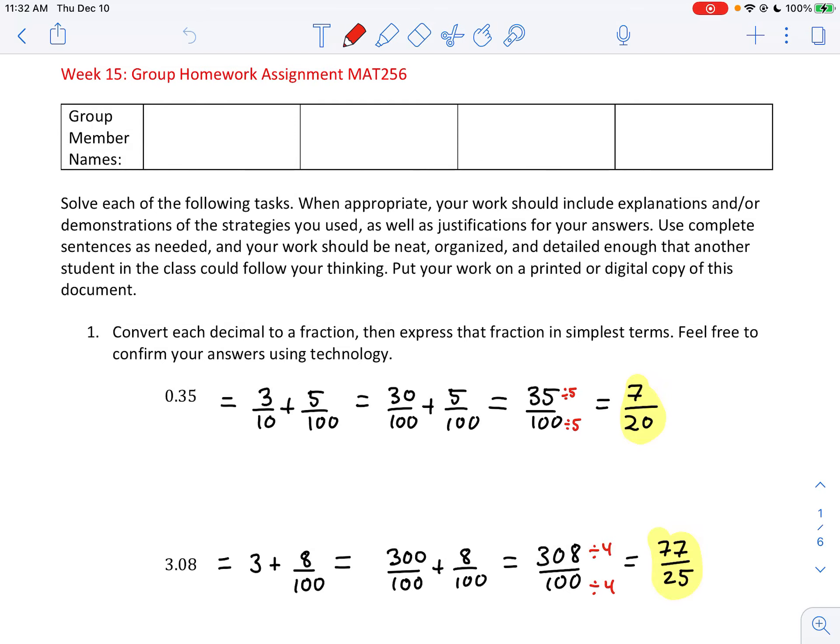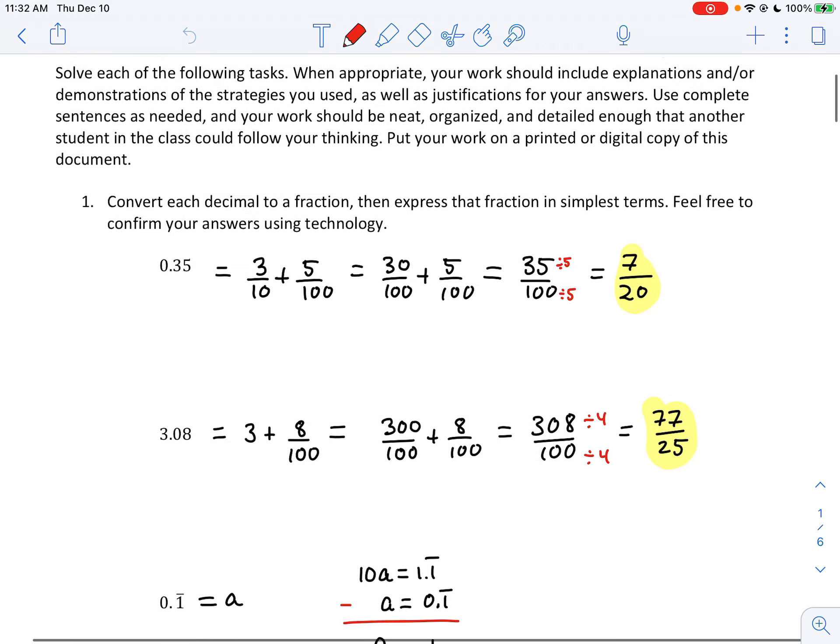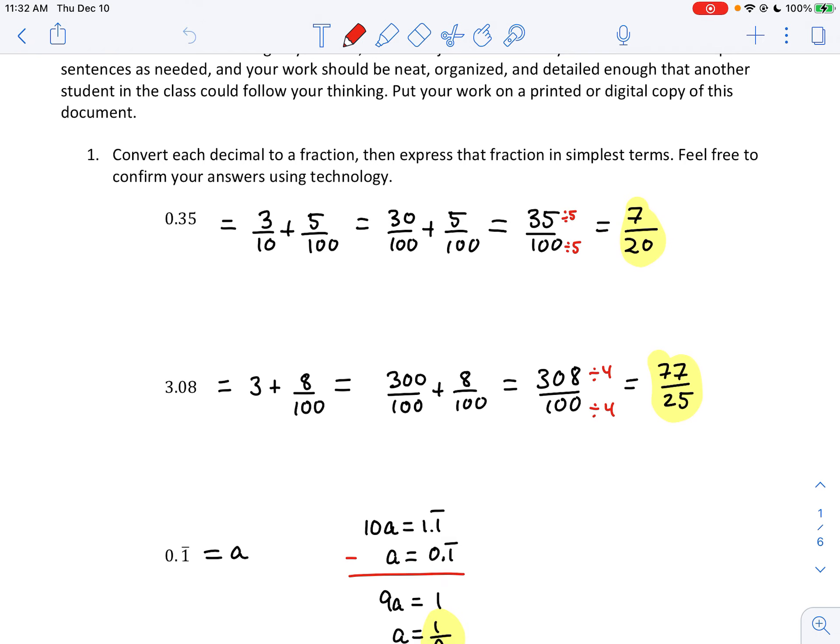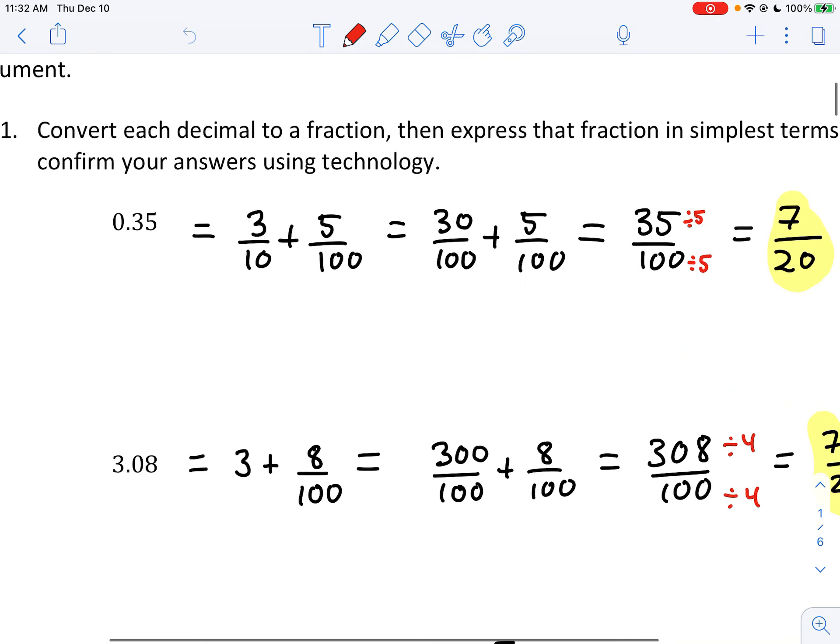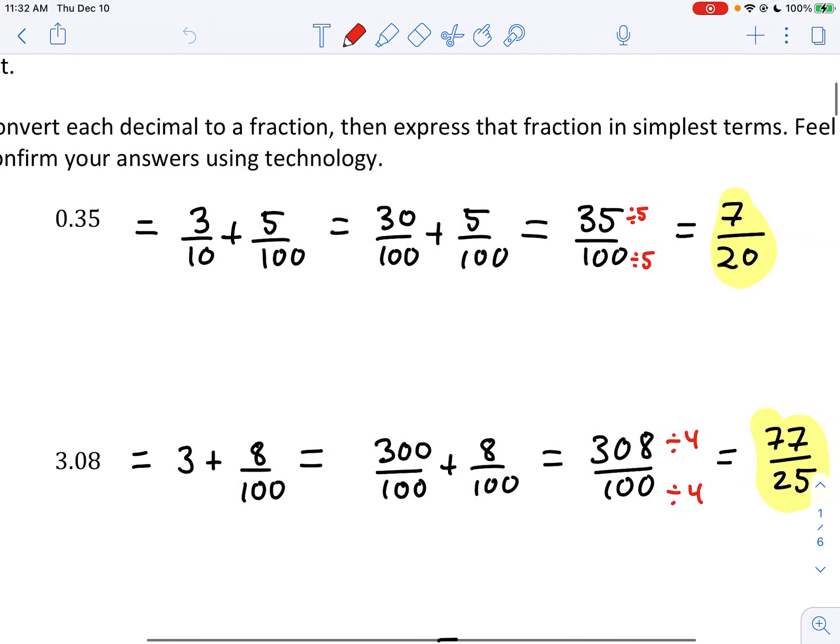Hello class, the solutions for week 15. I thought of 0.35 as 3 tenths plus 5 one hundredths, and then I achieved a common denominator and added them, and got 35 hundredths.